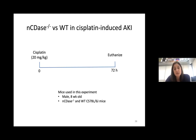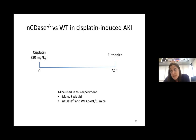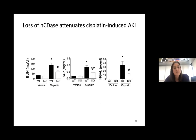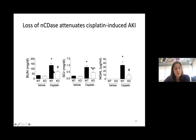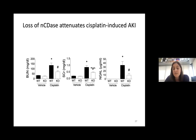We used a different dose of cisplatin — 20 mg/kg — because at this dose you can detect either worsening or improvement of injury. What we found was that the neutral ceramidase knockout mice were protected from kidney injury, whether measured by blood urea nitrogen, serum creatinine, or NGAL — a urinary marker of kidney function that is filtered by the kidney, and is now FDA-approved as a marker of kidney injury.